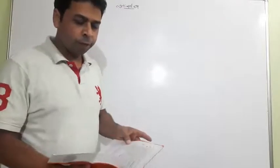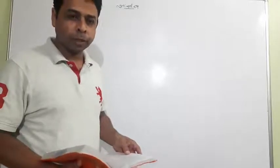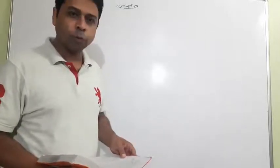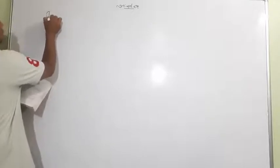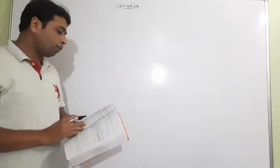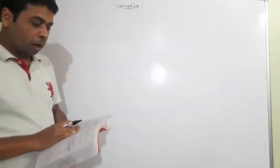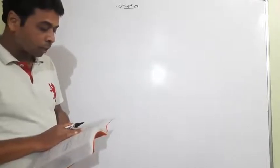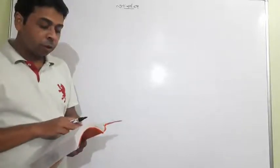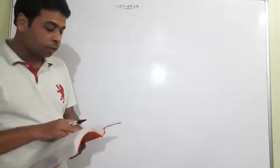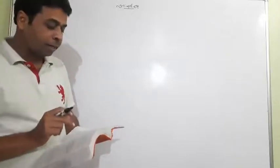Good morning students. Today we will do the optional exercise. Even though it is written as optional, the questions are actually important, that's why I'm covering a few questions from this exercise. Look at question number one. The question says: the ages of two friends Annie and Biju differ by three years. Ani's father Dharam is twice as old as Annie, and Biju is twice as old as his sister Cathy. The ages of Kathy and Dharam differ by 30 years. Find the ages of Annie and Biju.